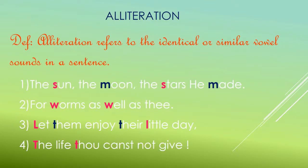The fifth figure of speech is alliteration — the repetition of identical or similar consonant sounds in a sentence. For example, 'The sun, the moon, the stars he made' — the sound of 's' is repeated twice and the sound of 'm' is repeated twice. 'For worms as well as thee' — the 'w' sound is repeated twice. 'Let them enjoy the little day' — the sounds 'l' and 't' are each repeated twice. 'The life thou canst not give' — the sound of 't' is repeated twice for better poetic effect.